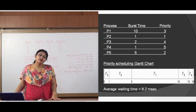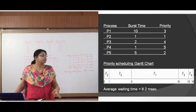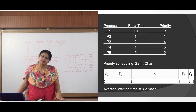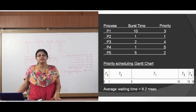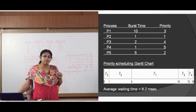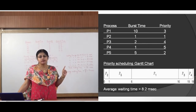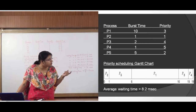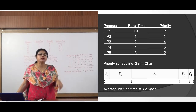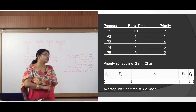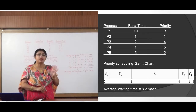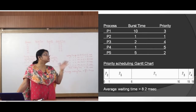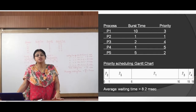This type of priority scheduling is non-preemptive because when one process gets the CPU, it comes out only once it completes. Finding the average waiting time: for P2 it is 0ms, for P5 it is 1ms, for P1 it is 6ms, for P3 it is 16ms, and for P4 it is 18ms. So 0 + 1 + 6 + 16 + 18 divided by 5 gives us the average waiting time of 8.2 milliseconds. This is the non-preemptive priority scheduling algorithm.